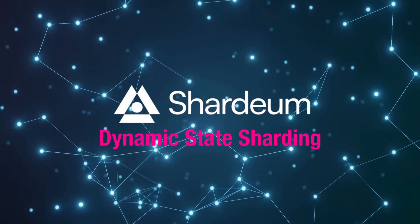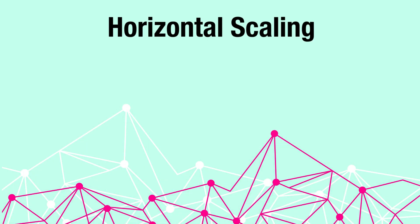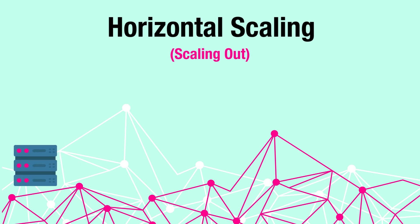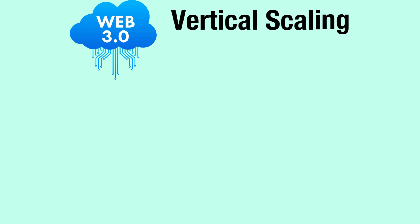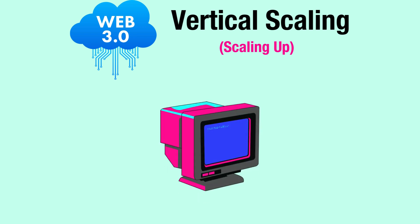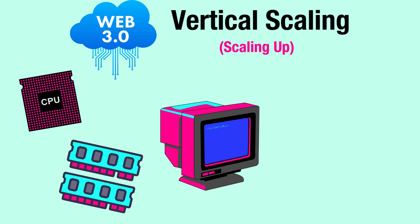So what is horizontal scaling? Horizontal scaling, also called scaling out, involves adding more nodes to a network to handle increased load, as opposed to the traditional approach in Web3, vertical scaling, or scaling up. In contrast to horizontal scaling, vertical scaling involves networks increasing the hardware capacity of their existing individual nodes through upgrading components such as the CPU, random access memory, and storage.